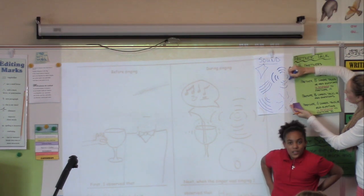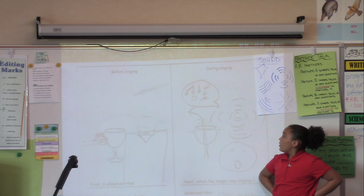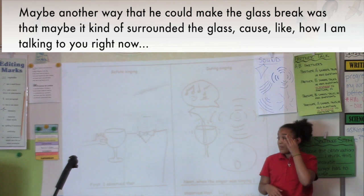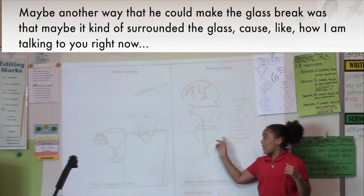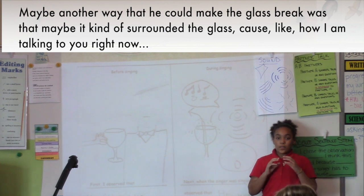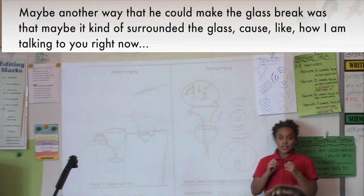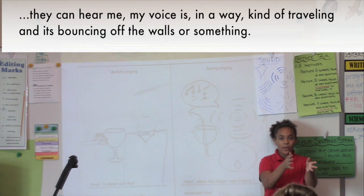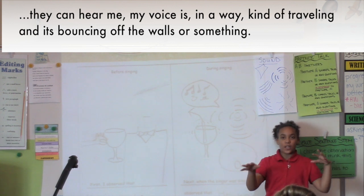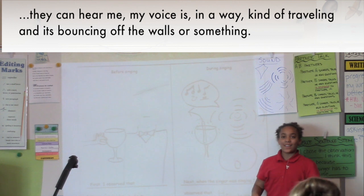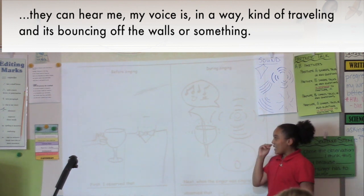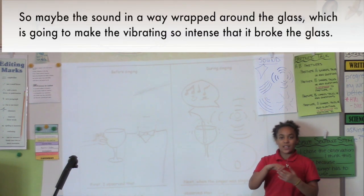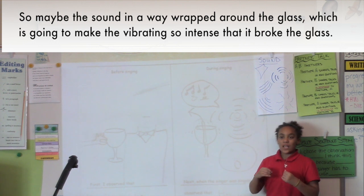When you first drew it, you just had the curves on the left. Why did you add more curves, more of the lines that you drew around him? Because maybe the other way that it could make the glass break was that maybe it could have surrounded it in the glass. Like how I'm talking to you right now, it's not just them I can hear, but my voice is kind of in a way traveling. So maybe the sound in a way wrapped around the glass, which is going to make the vibrating so intense that it broke the glass.